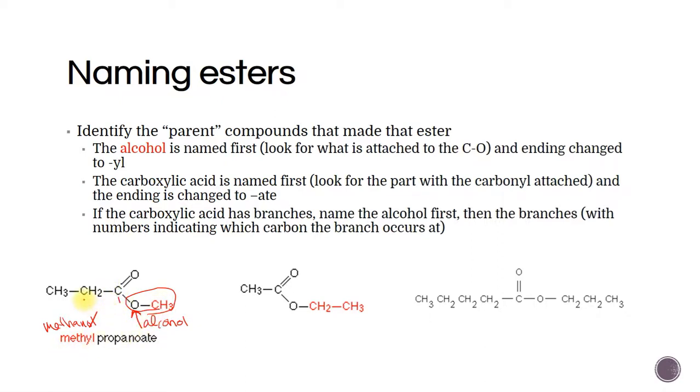And then we look over here for the other name and that carbonyl is always carbon number one. So that's going to be three carbons long so pro. And we are going to erase the, so propane is what we would start with, we're going to erase the E from propane and we replace it with O-A-T-E, anoate.